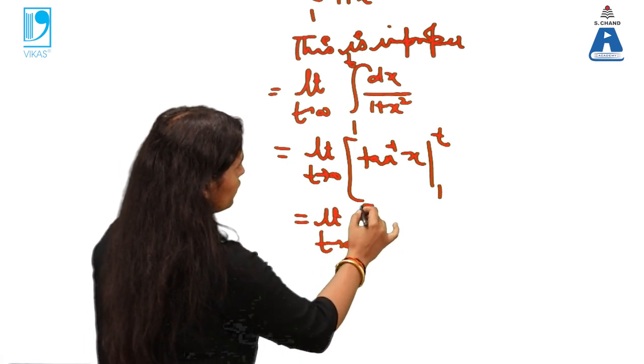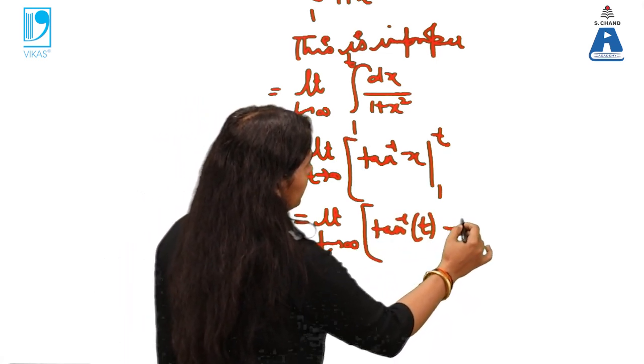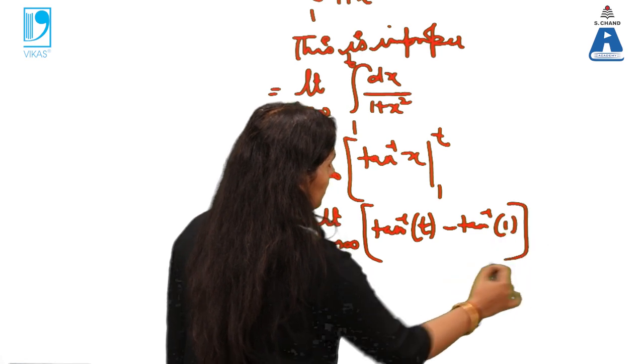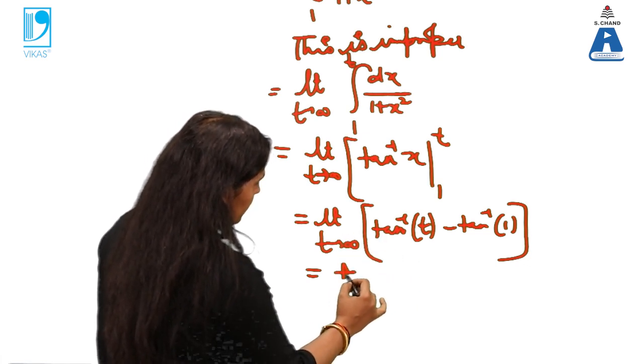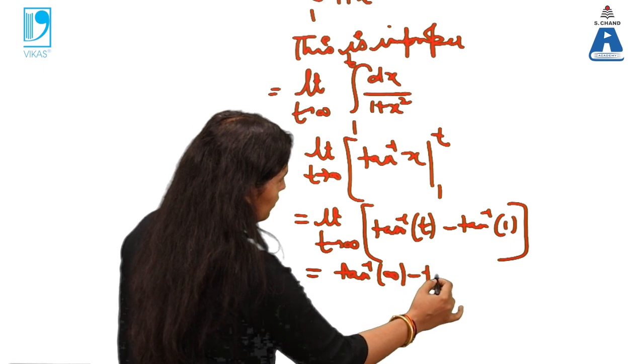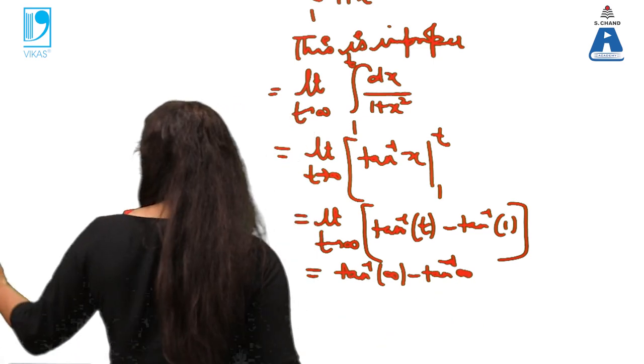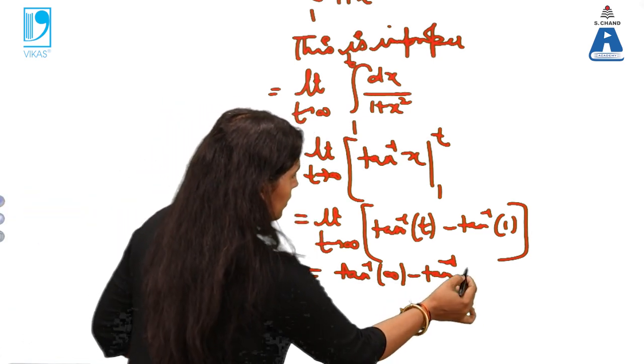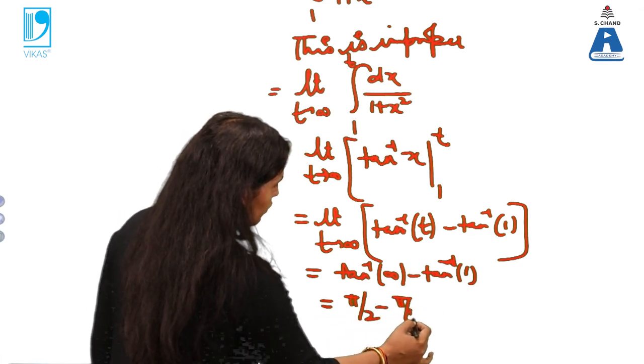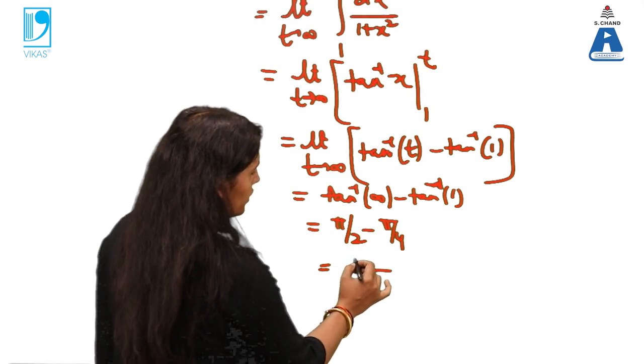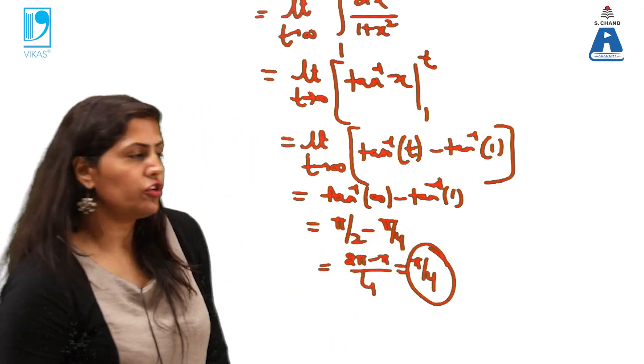So limit t tending to infinity. Tan inverse t minus tan inverse 1. When you substitute the lower limit you put a minus. Now take this limit. So it will become tan inverse infinity minus tan inverse 1. So tan inverse infinity is π by 2 and tan inverse 1 is π by 4. So ultimately this value is 2π minus π. So this is also convergent case.